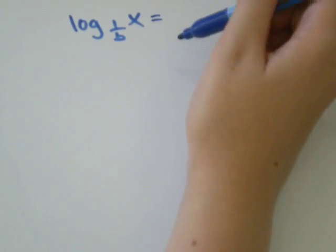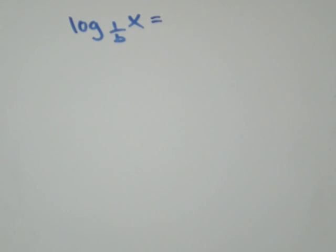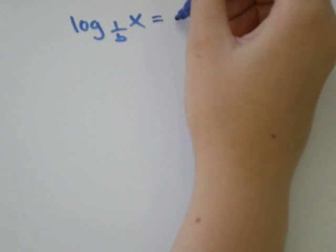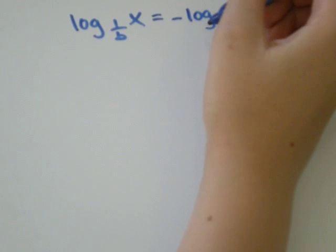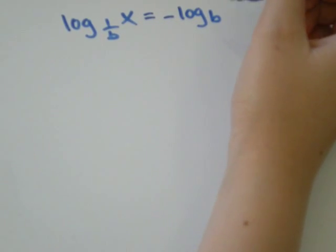There's more than one correct way to simplify. The first way to correctly simplify would say that's equal to negative log b of x.